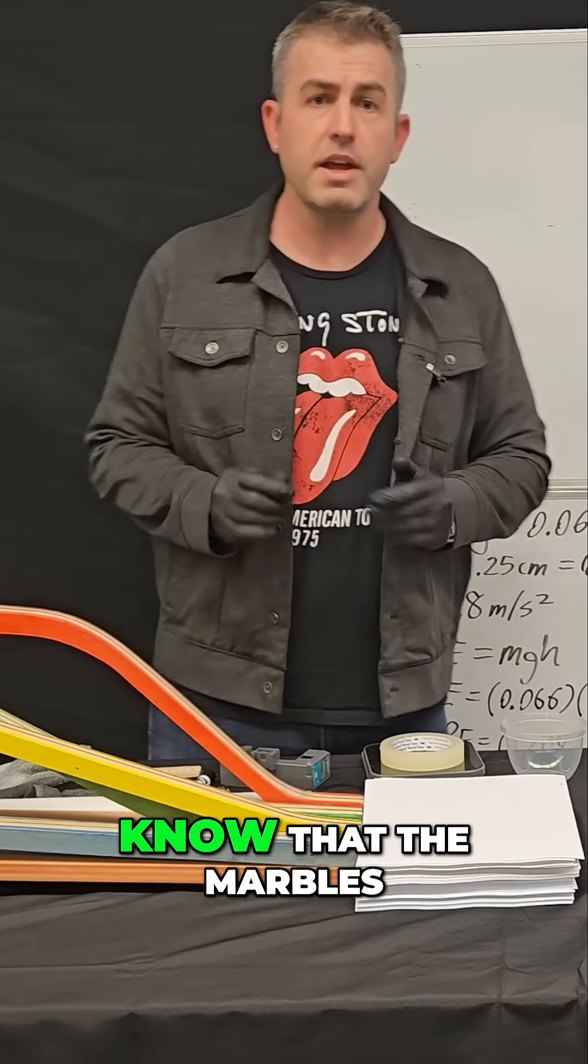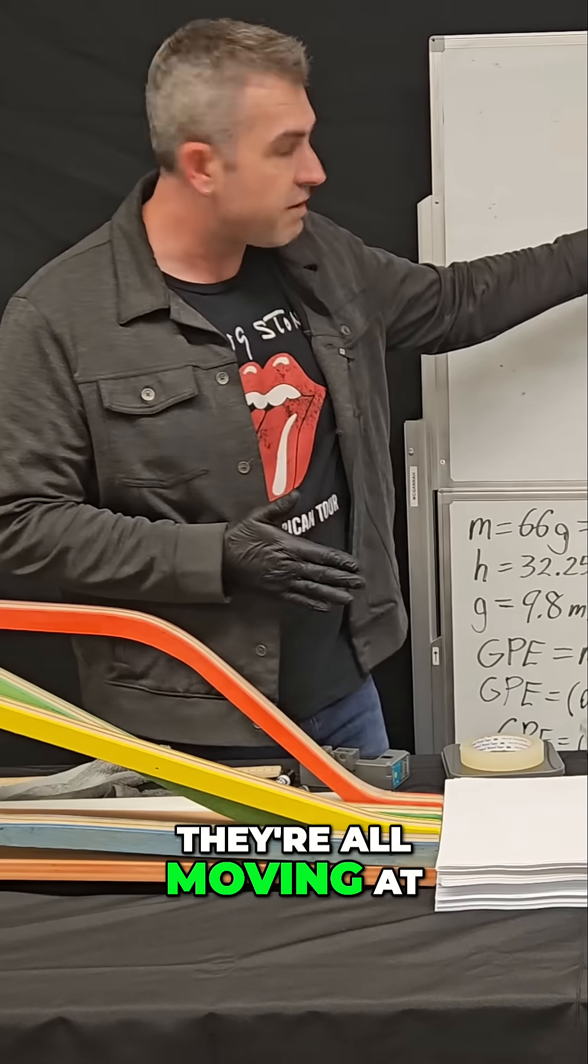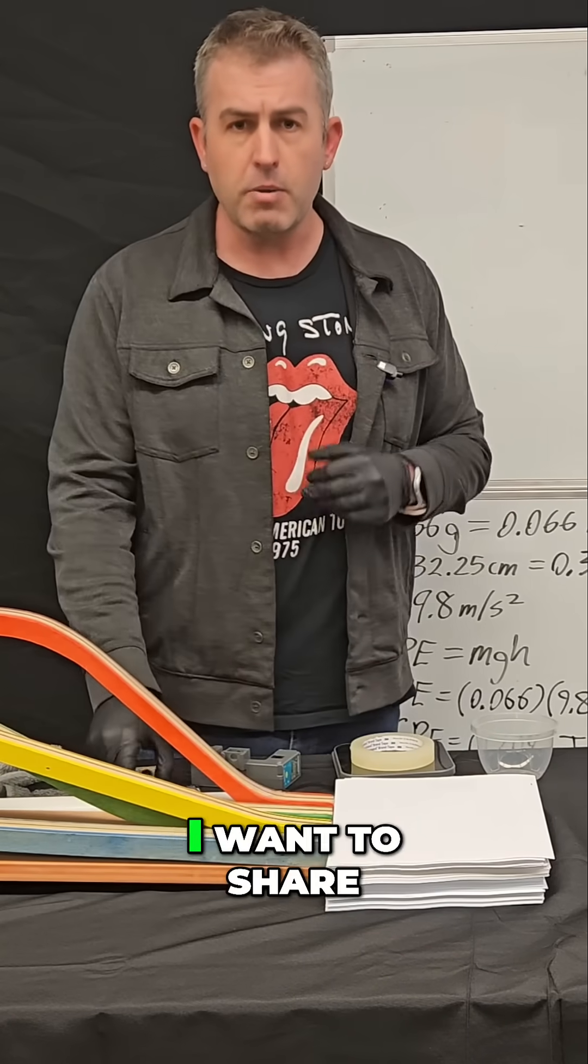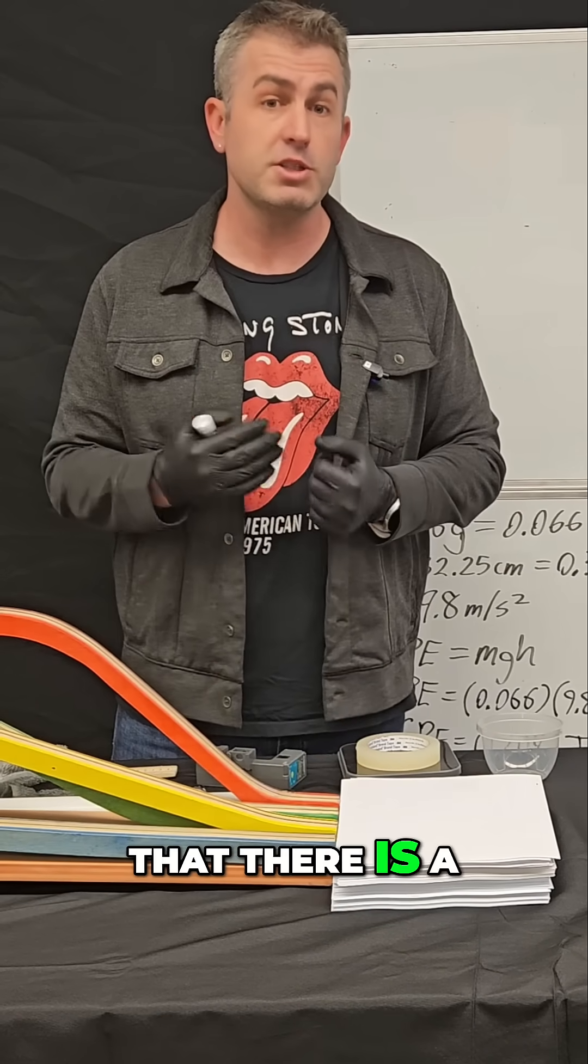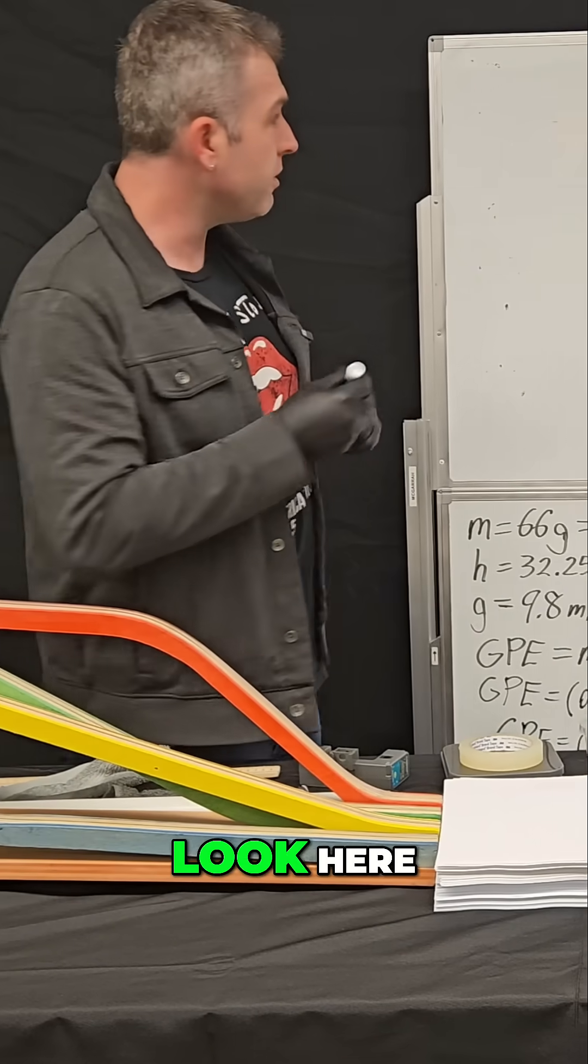Okay, so now that I know that the marbles all have the same velocity at the bottom of the ramp and they're all moving at this velocity, 2.517 meters per second, I want to share with everybody out there that there is a shortcut method that can calculate those velocities in one single step. So let's take a look here.